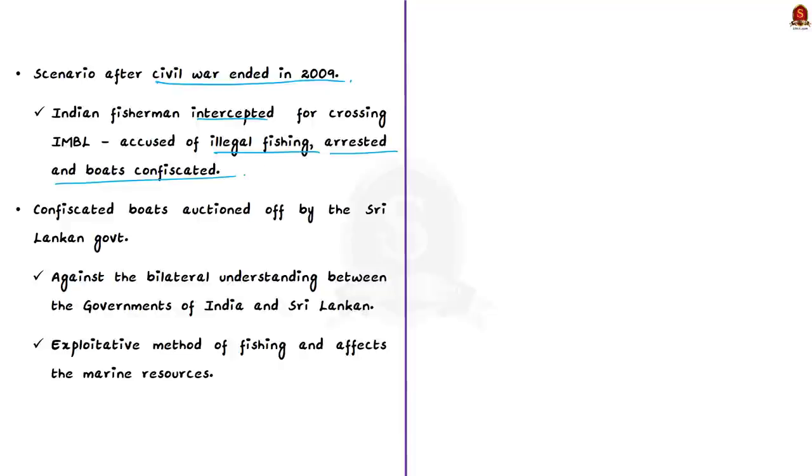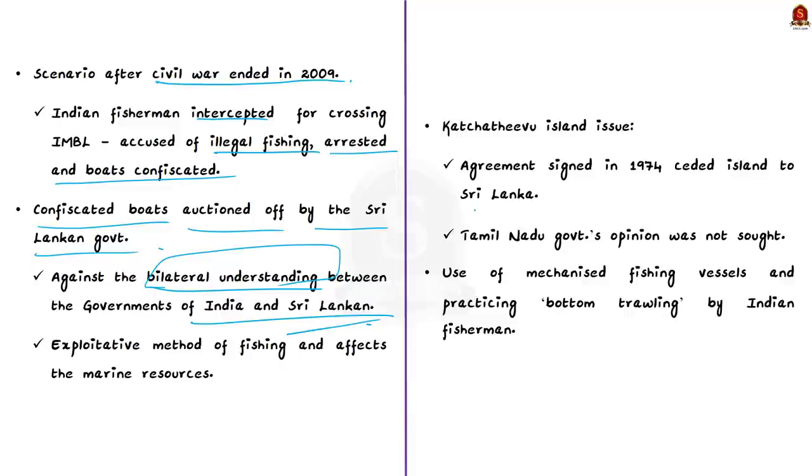The issue is further aggravated as the confiscated boats were auctioned off by the Sri Lankan government. Through diplomatic channels there exists a bilateral understanding on the matter to finalize disposal of unsalvageable Indian fishing boats, but still the boats are being auctioned. The IMBL issue should be seen with the Kacchathivu island issue. An agreement was signed in 1974 through which the island was ceded to Sri Lanka by India. Tamil Nadu government's opinion was not sought before this action.